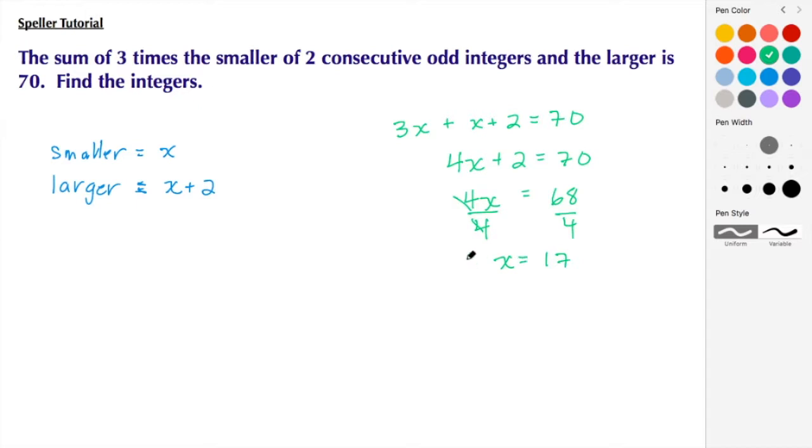This is the smaller of the two, so the smaller is 17. Substituting into X + 2, we get 17 + 2, so the larger is 19. Before we settle on these two consecutive odd integers as being